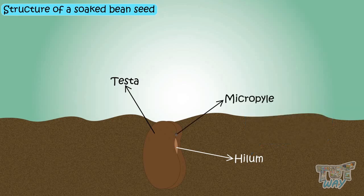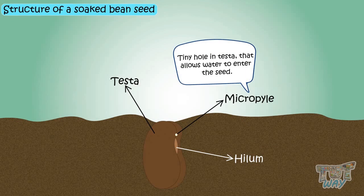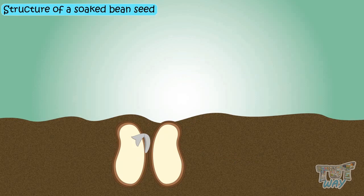This is a tiny hole in the testa just on top of the hilum that allows water to enter the seed. Now, open the bean seed into two halves.